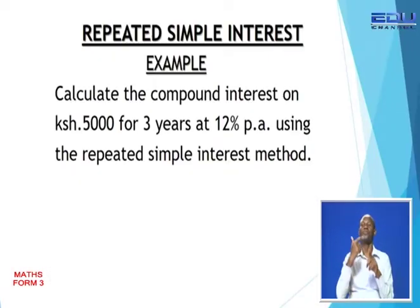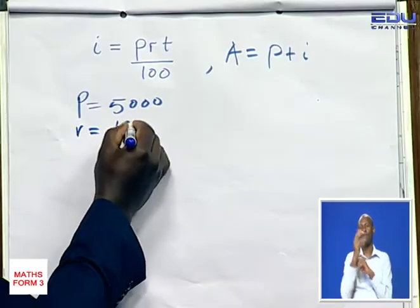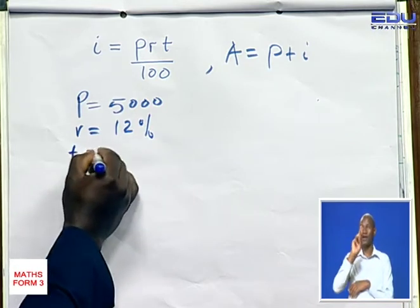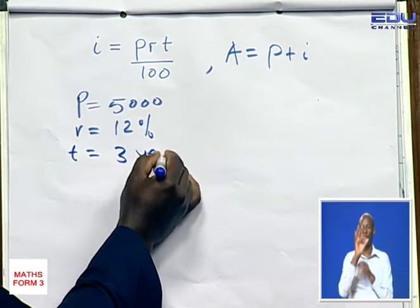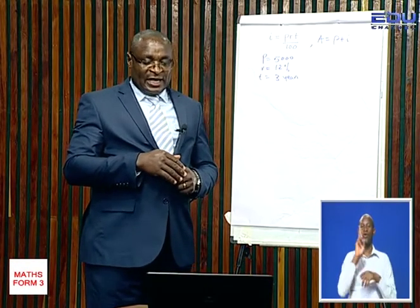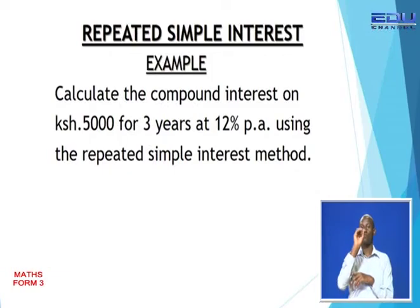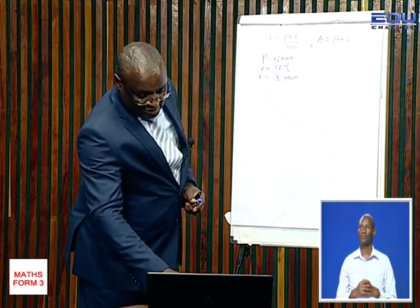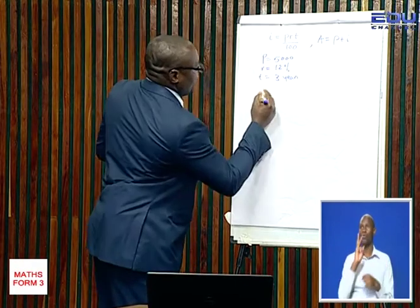Let's look at an illustration. The rate is 12% per annum and the duration is 3 years. We will use the first formula, which is the Repeated Simple Interest Method.